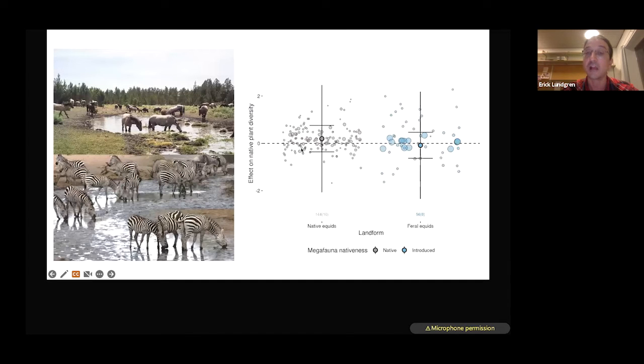Here is for equids. Here are studies that included native equids. Unfortunately, most of those also included very complex, diverse communities of animals like with elephants and rhinos and 15 species of antelope. And here are feral equids, wild horses and wild donkeys. And again, no difference in impact between these organisms.